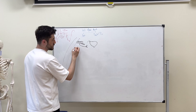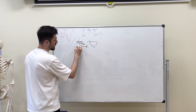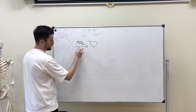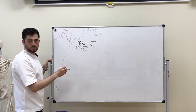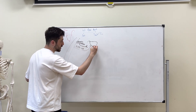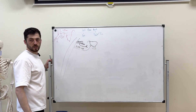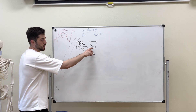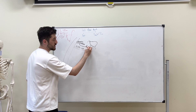The next branch is arteria vesicalis inferior. Arteria vesicalis inferior supplies the inferior portion of the urinary bladder. At the same time, below the urinary bladder, there is the prostate, and the vesicalis inferior has some branches to it as well.